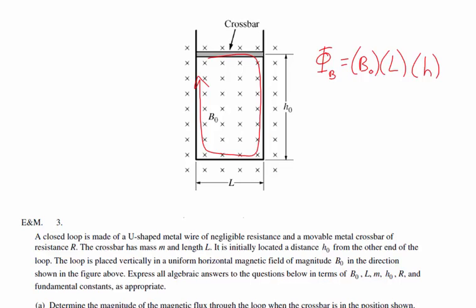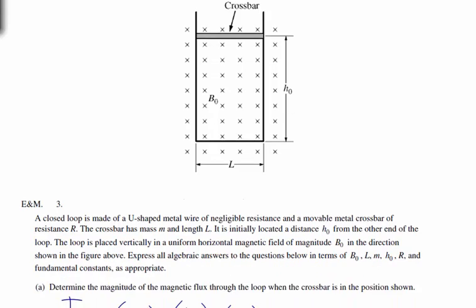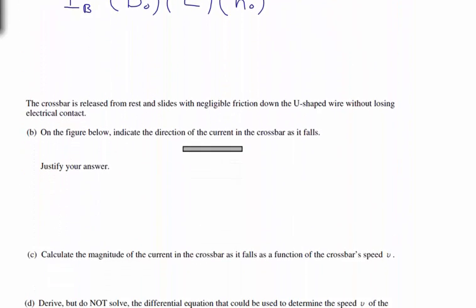If I point the thumb of my right hand in the direction of the current — to the right — and bend my fingers down through the center of the loop, my fingers point into the page. So that clockwise current generates a magnetic field into the page, canceling out the decrease in magnetic flux. Either of those justifications is acceptable. The current in the bar is to the right.